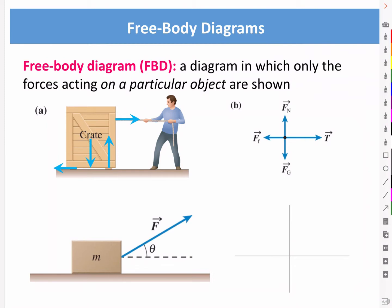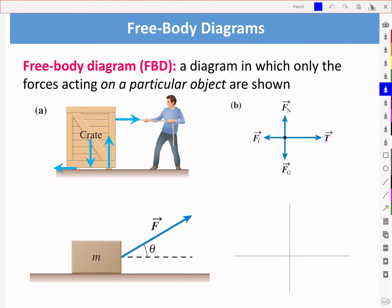Here is a man pulling a crate with a rope. Let's look specifically at the forces on the crate. The person is applying a force via the tension of the rope. The weight of the crate due to the force of gravity acts downwards. The surface of the floor is providing an upward normal force that supports the crate. And because the crate is in contact with the floor, there is friction between the surfaces, and this friction is in the opposite direction to any possible motion — it impedes any motion.